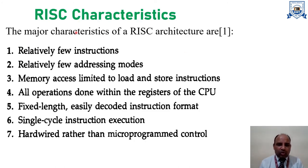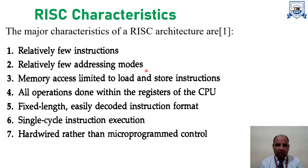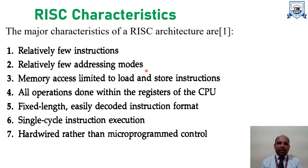The major characteristics of RISC architecture are as follows. First, relatively few instructions compared to CISC computers. Second, relatively few addressing modes — RISC only supports very limited addressing modes, unlike CISC which supports a range including direct, indirect, immediate, and indexed addressing. Because RISC has a limited number of instructions, the number of addressing modes it supports is also relatively fewer.